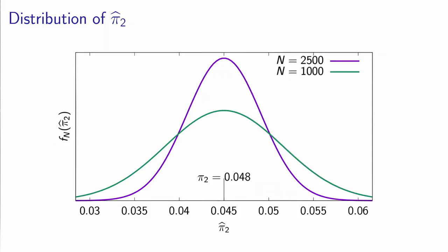If you change the sample size, the spread, that is called the variance of the distribution, increases. In this example, I have plotted the original shape of the distribution of pi 2 hat in blue for a sample size of 2,500 that we use in our simple example. But if I calculate the distribution for a sample of size 1,000, I obtain a distribution with a much bigger variance. Therefore, I have more chance to obtain an estimate that is far away from the true value of the parameter.